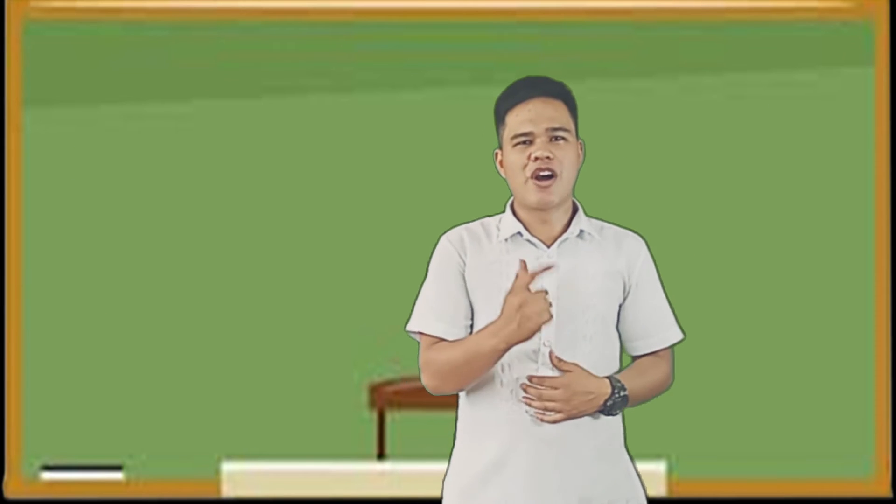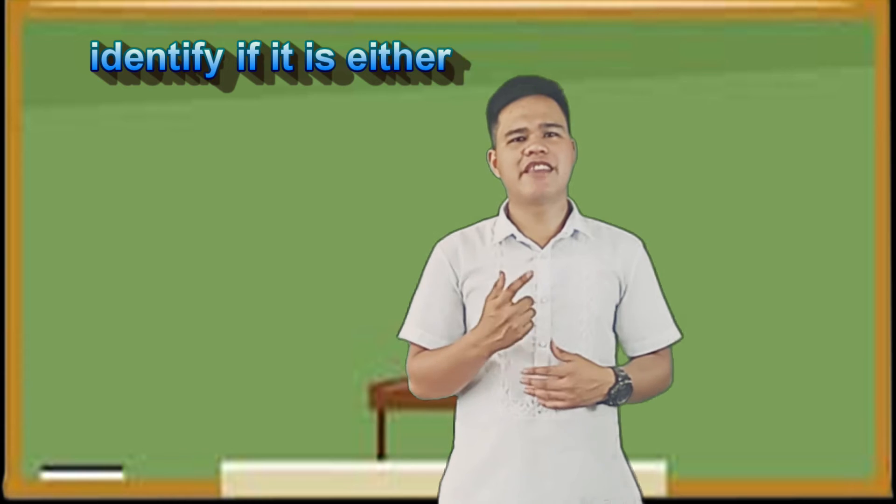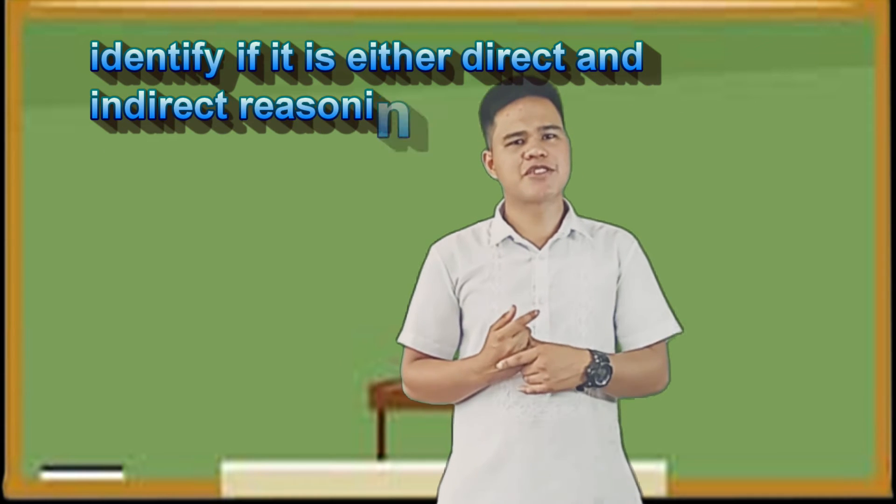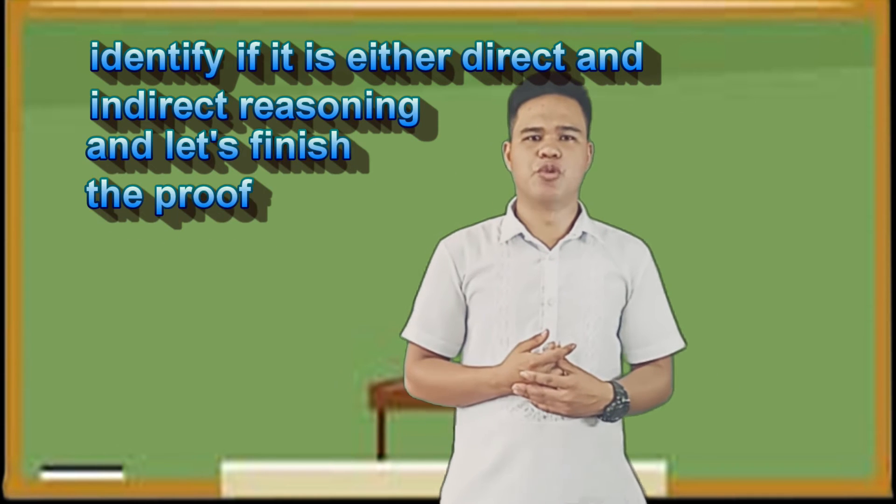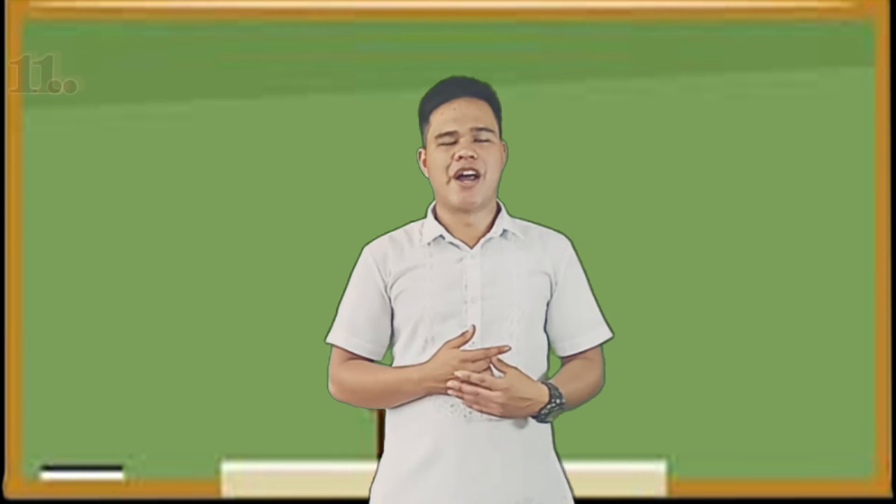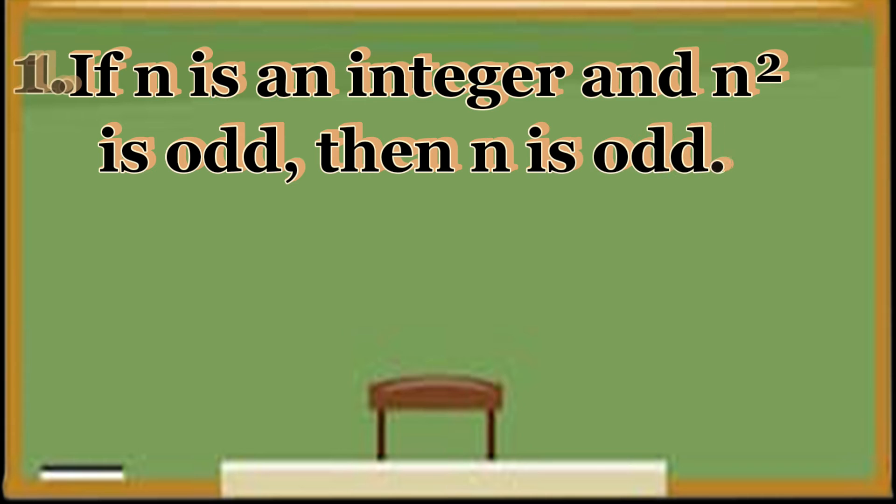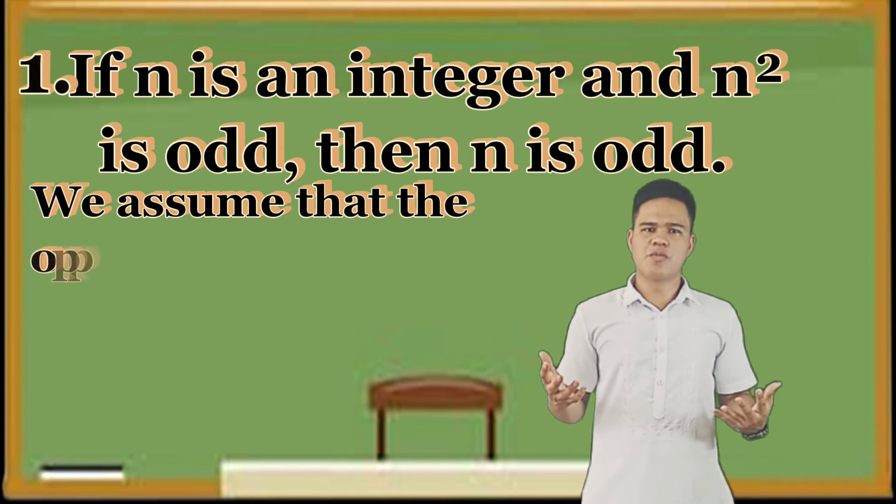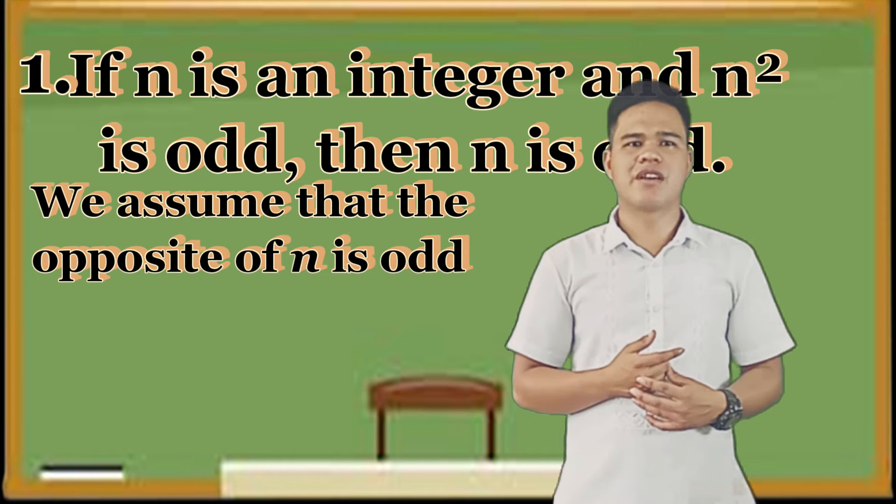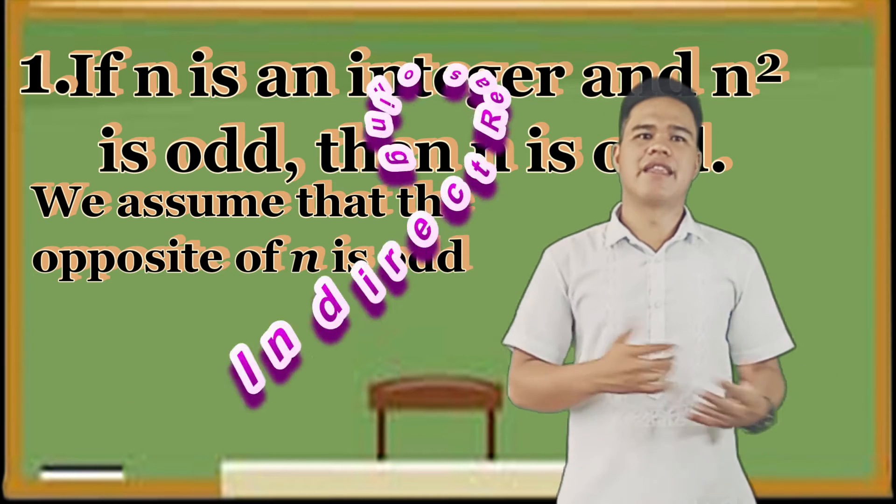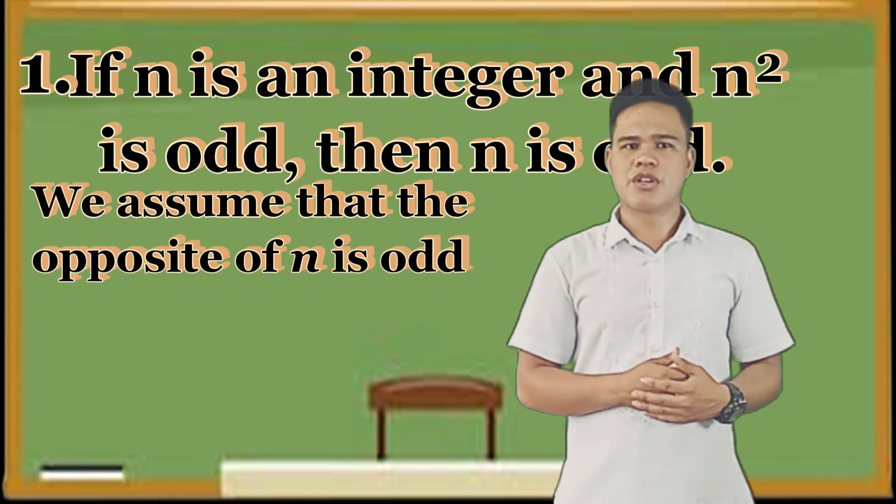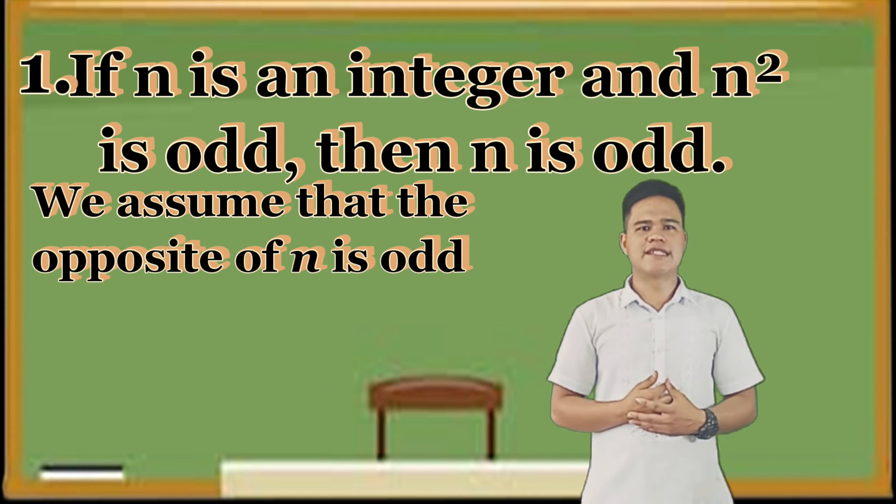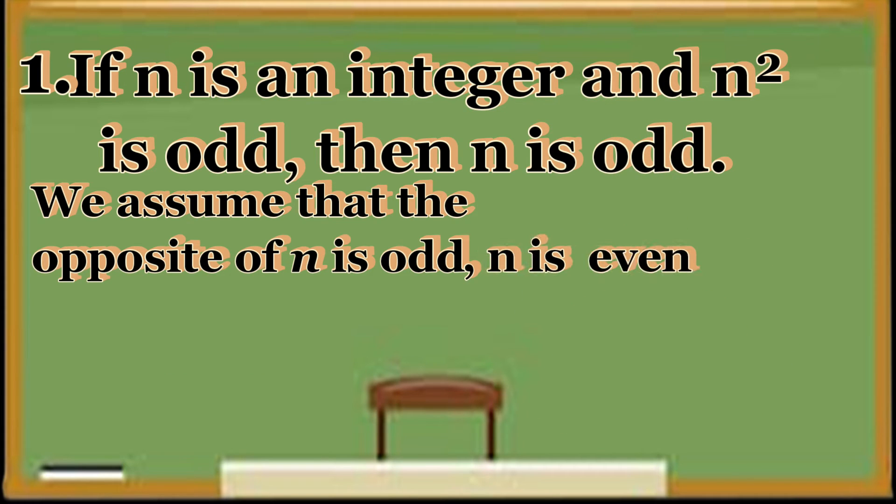This time, we are going to identify if it's either direct or indirect reasoning and finish the proof. Number 1: If N is an integer and N squared is odd, then N is odd. First, we assume the opposite of N is odd. So this is indirect reasoning. We assume the opposite, therefore N is even.